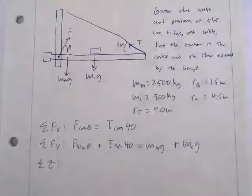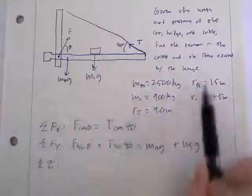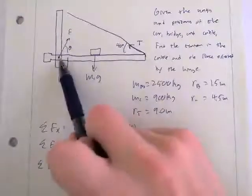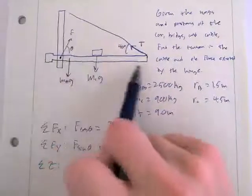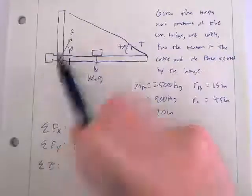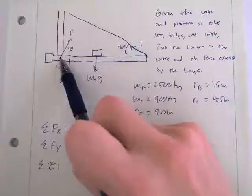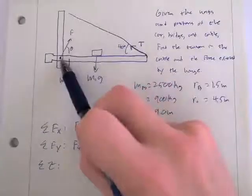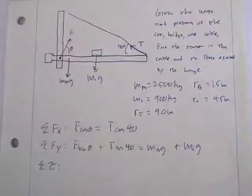In this case, I still want to pick this hinge point as my pivot. This is my choice, but the reason is that I don't know much about this force F. However, if I pick the pivot point right where the hinge is exerting its force, then F will not show up in my torque equation. That makes the equations a little bit easier to work with.